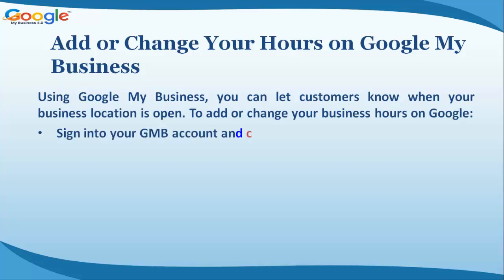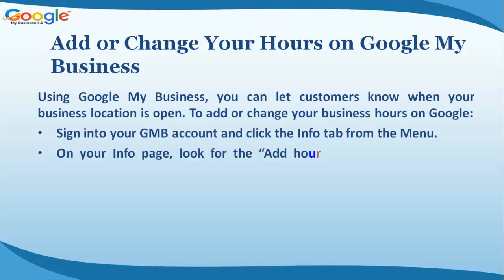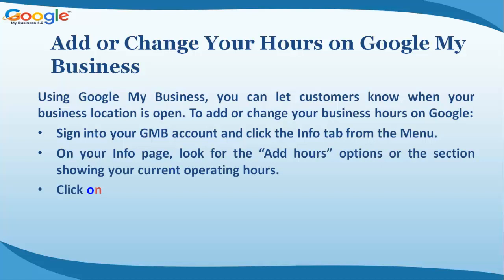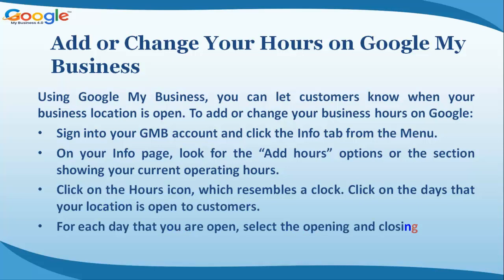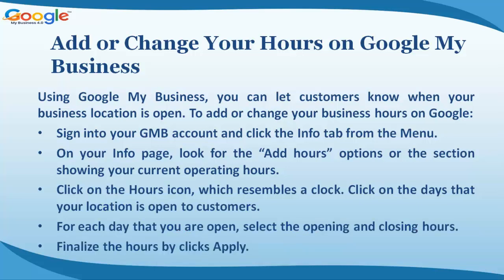Using Google My Business, you can let customers know when your business location is open. To add or change your business hours on Google, sign into your GMB account and click the Info tab from the menu. On your Info page, look for the 'Add Hours' option or the section showing your current operating hours, then click on the hours icon which resembles a clock.